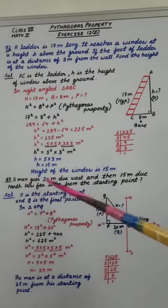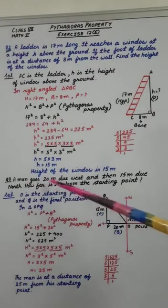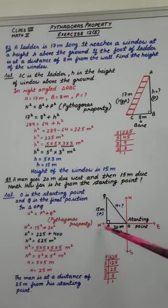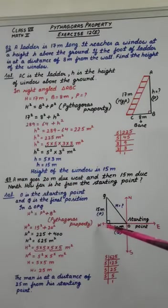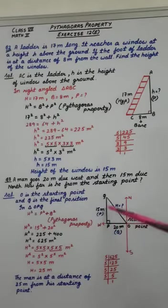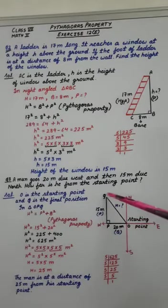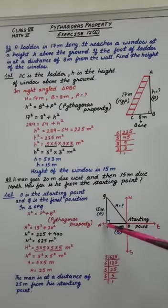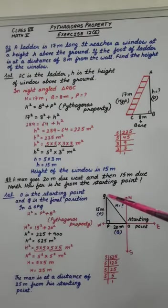Now, it is given in the question that a man goes 20 meter due west. So, in west direction, 20 meter. Then, 15 meter in the north direction. So, from this point, 15 meter up in north direction.